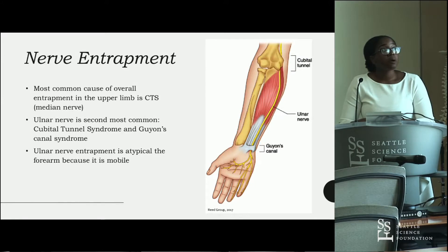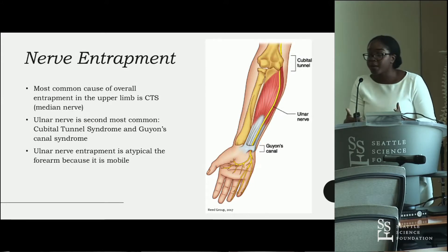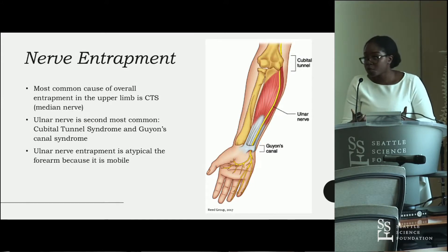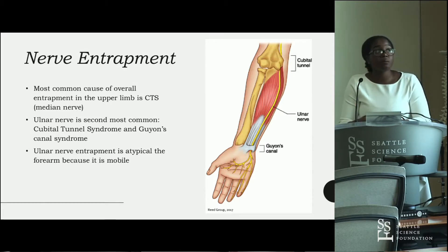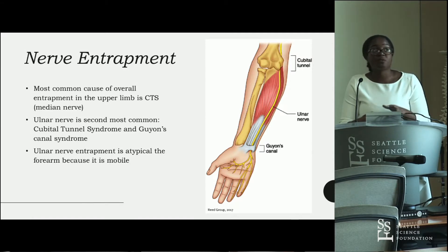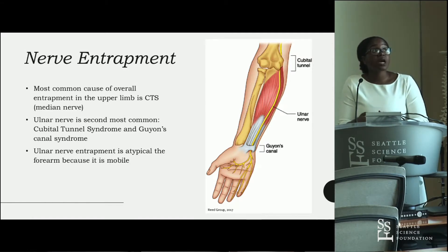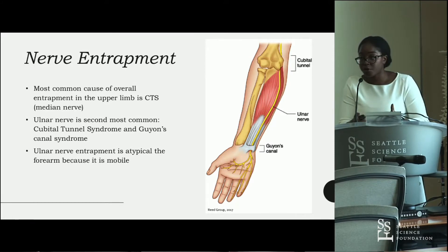The most common cause of overall entrapment in the upper limb is carpal tunnel syndrome, which is an impingement on the median nerve by the flexor retinaculum in the carpal tunnel. The second most common is entrapment of the ulnar nerve.